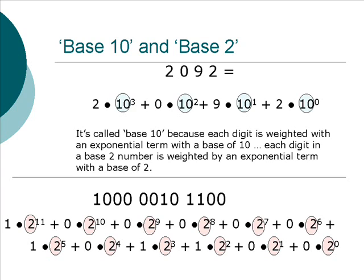This explains why we have the terms base 10 and base 2 to describe number systems. Base 10 is called base 10 because every digit is weighted with an exponential term that has a base of 10, and each digit in a base 2 number is weighted by an exponential term with a base of 2.